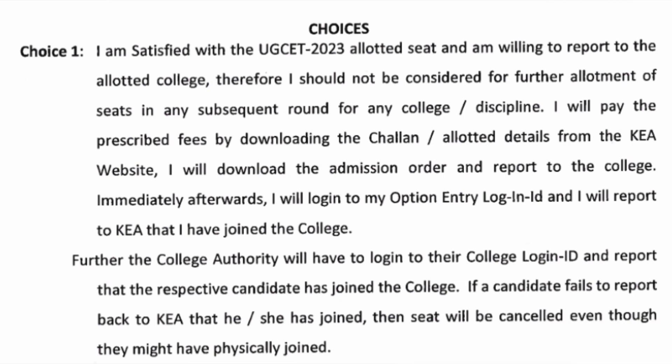Choice 1 definition: I am satisfied with the UGCET 2023 allotted seat and I am willing to report to college. Therefore I should not be considered for further allotment and I will pay the prescribed fee by downloading the challan. So you are ready to join the college — you download the challan from the KEA website, pay the fees, download the admission order, report to college, and then also log in to the KEA website to report that you have joined the college. Please don't forget to report on the KEA website, otherwise the seat can be lost. Report at both places — in college as well as on the KEA website.